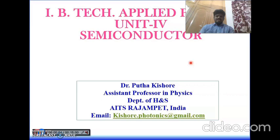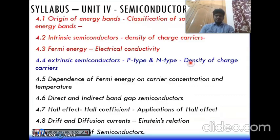Good morning students. We are going to discuss the next topic in Unit 4 Semiconductors: extrinsic semiconductors, p-type and n-type semiconductors, and density of charge carriers in p-type and n-type semiconductors. Whenever we dope foreign elements or impurities into intrinsic semiconductors, they are called extrinsic semiconductors. These impurities are usually third group or fifth group elements. Doping with third group elements gives p-type, and fifth group gives n-type semiconductors.